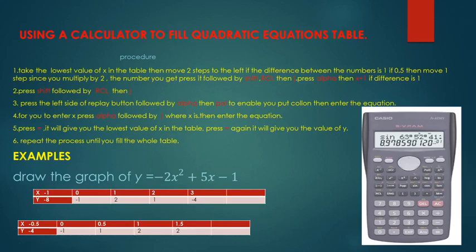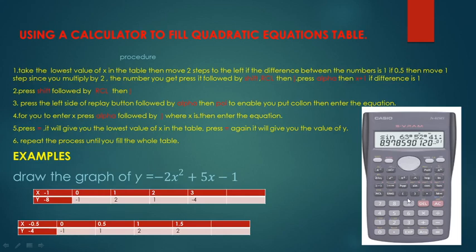After pressing negative 3, the second thing you do is press Shift. After pressing Shift, press RCL. Then press the crossing bracket. After that, press Alpha — that gives you the second function. Then press X, so you're able to write X. Then press plus 1, because the difference was 1.